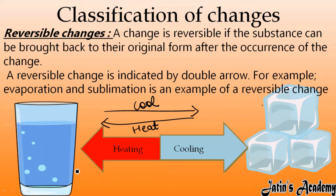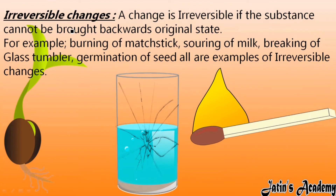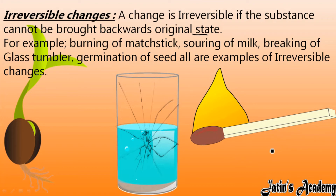The change which can be reversed or brought back to its original state is called a reversible change. Now, irreversible changes: a change is irreversible if a substance cannot be brought back into its original state. For example, when this matchstick burns fully, it is going to change its properties completely.